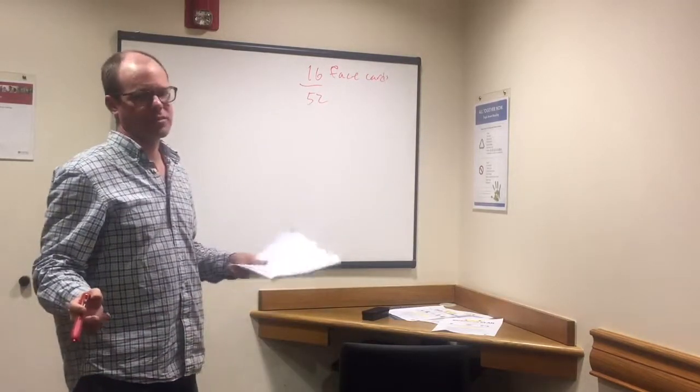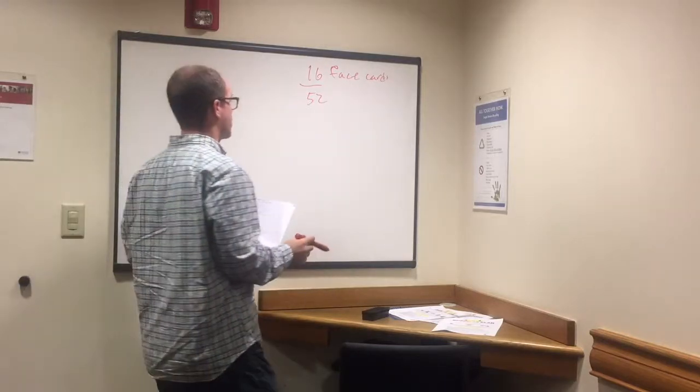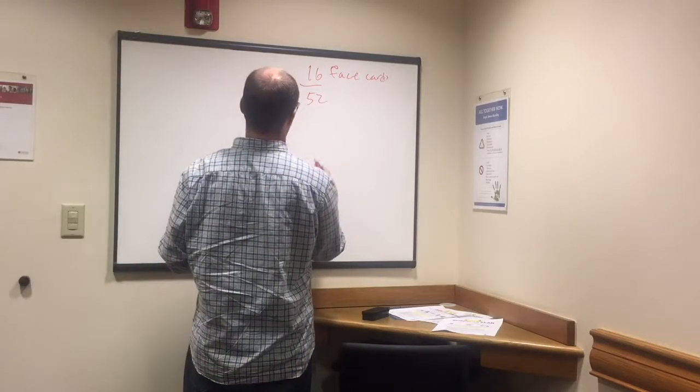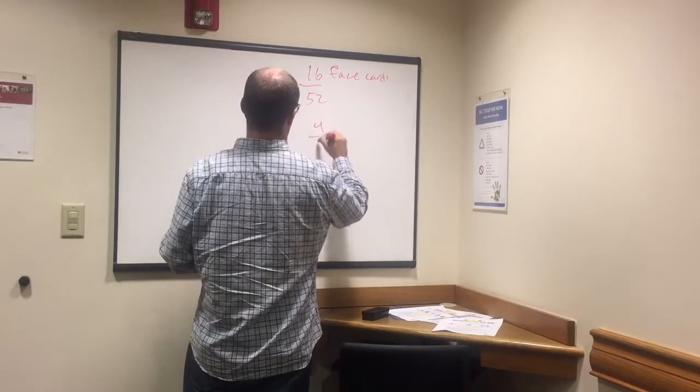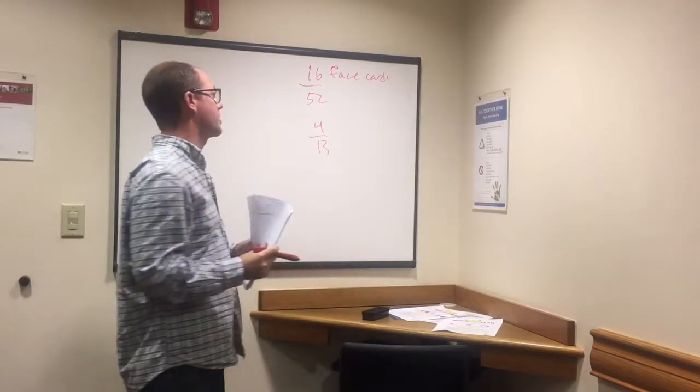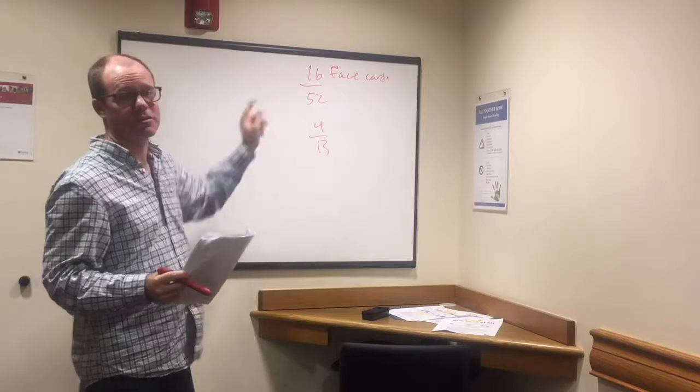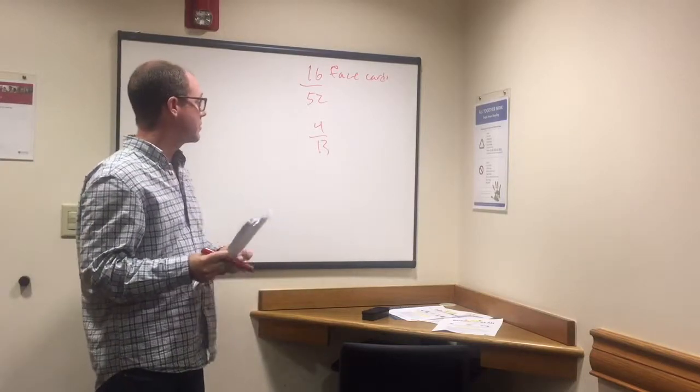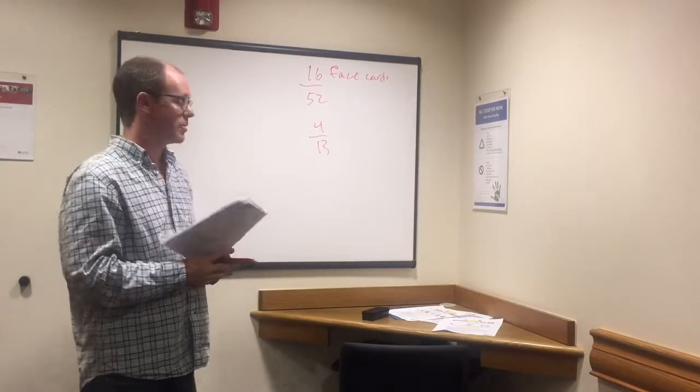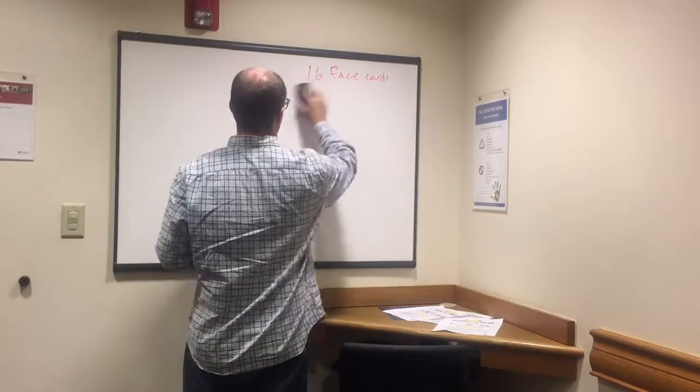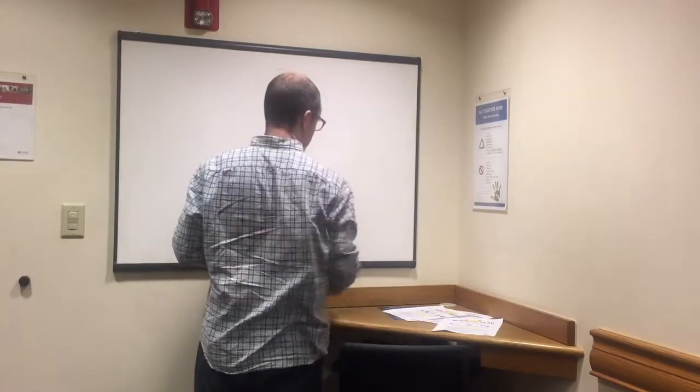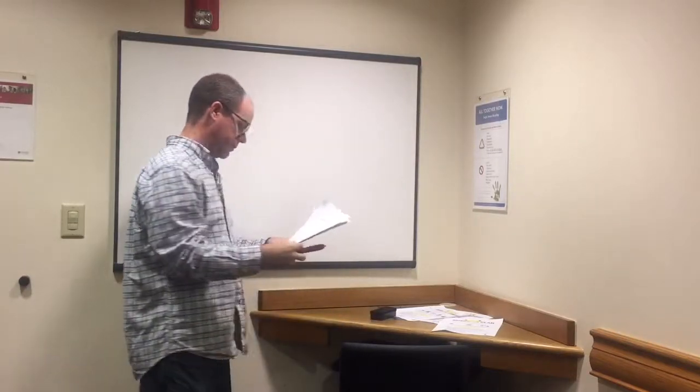And almost all questions are going to want you to reduce that. So if we have 16 over 52, if we divide each of those by four, we will get four out of 13. 16 divided by four is four. 52 divided by four is 13. And so then a good answer would be four out of 13 chance you will get a face card.